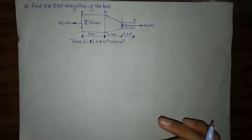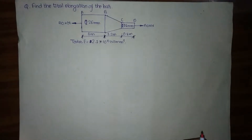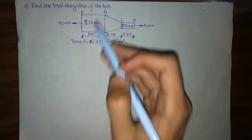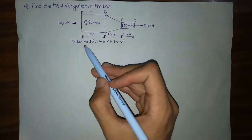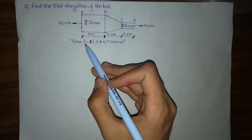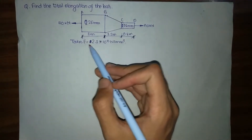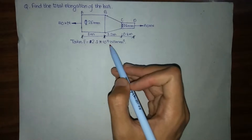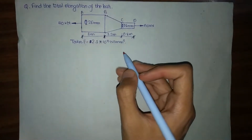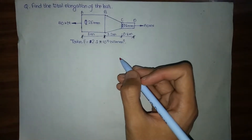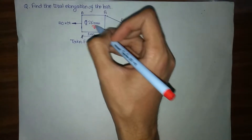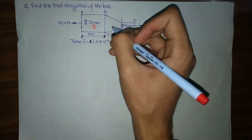Hello online viewers, welcome to our lecture video. In this lecture video we are going to find the total elongation of this bar, and we have been given Young's modulus E equals 2.1 into 10 to the power 5 Newton per mm square. We have three sections: the first section is portion AB, the second is portion BC, and the third is portion CD.